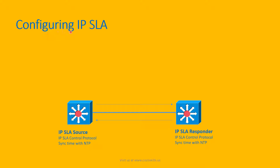Configuring IP SLA. In order to configure IP SLA, we need to configure it on both the IP SLA source and the IP SLA responder. On the IP SLA responder, we configure it with the command 'ip sla responder' at configuration mode.